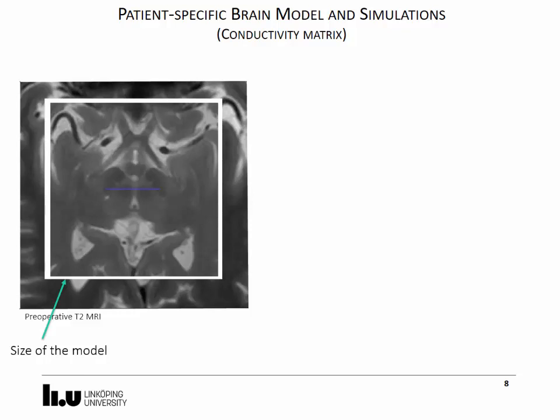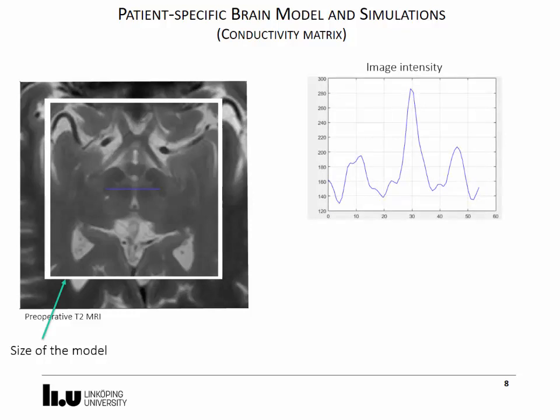The MR images are then segmented based on the image intensities. The user may draw a line as the blue one shown in the image to display the intensity values along it or draw an ellipse to obtain an average intensity value inside it.